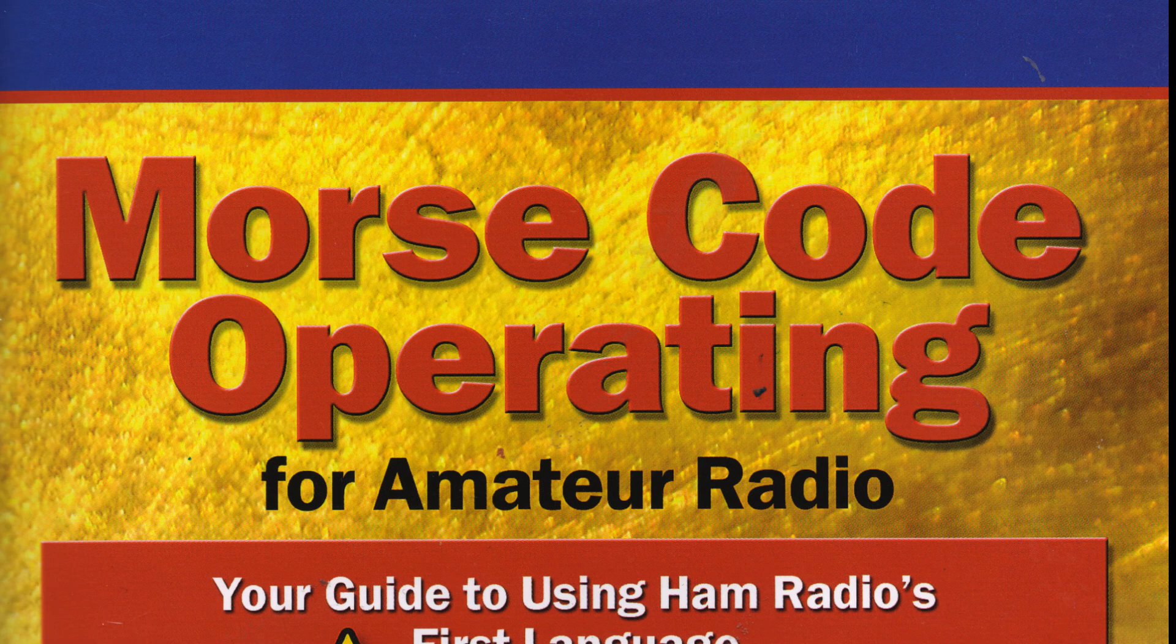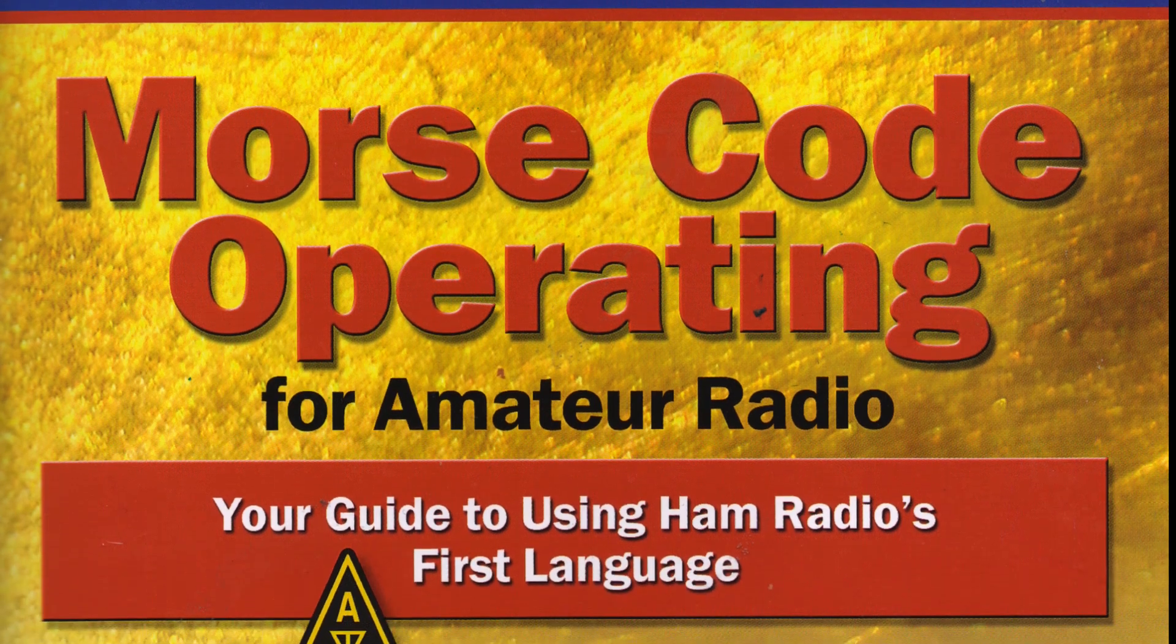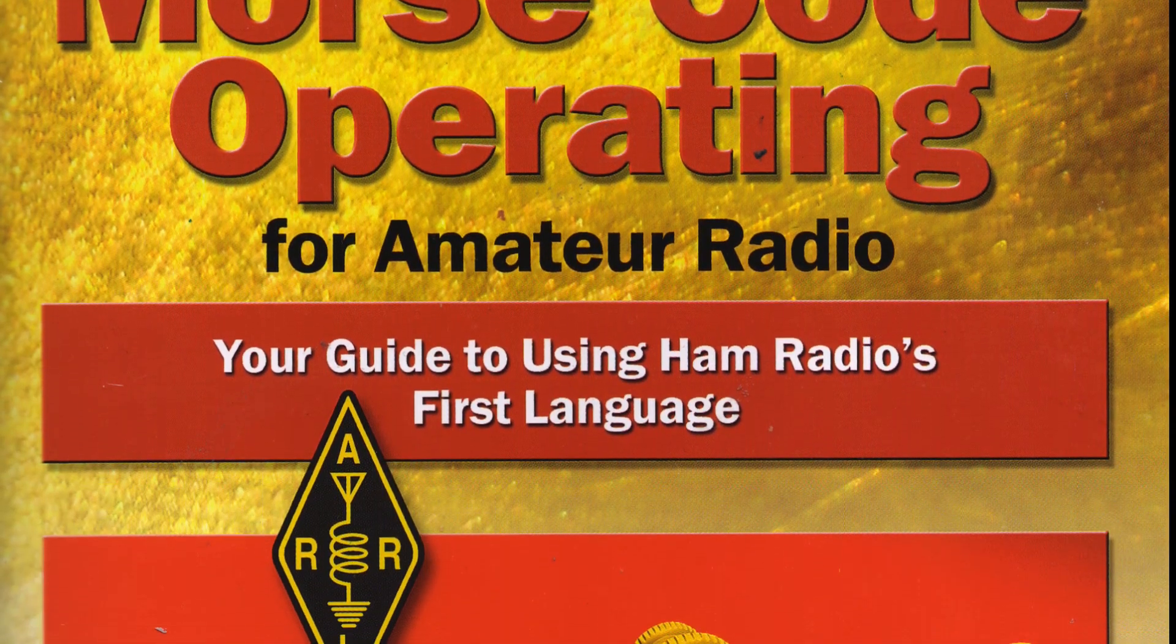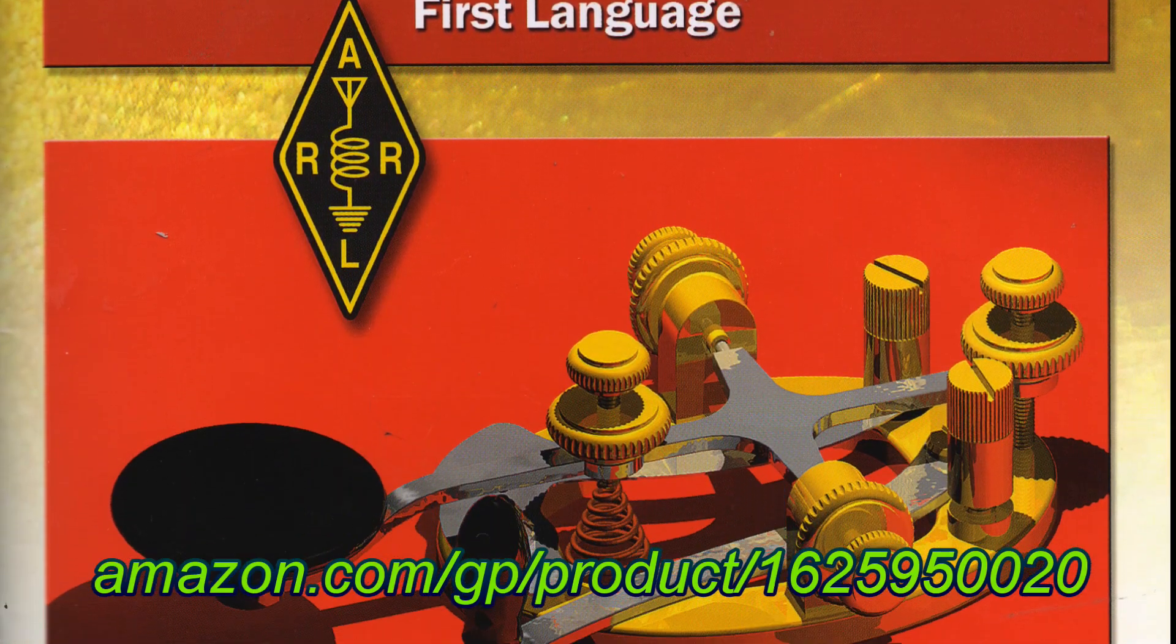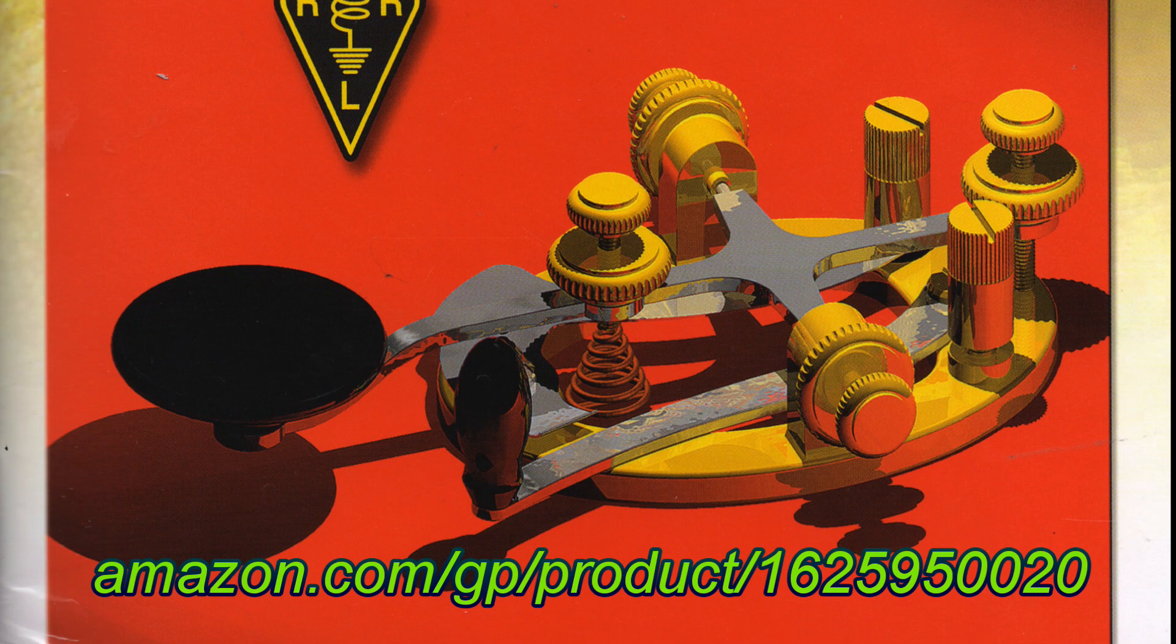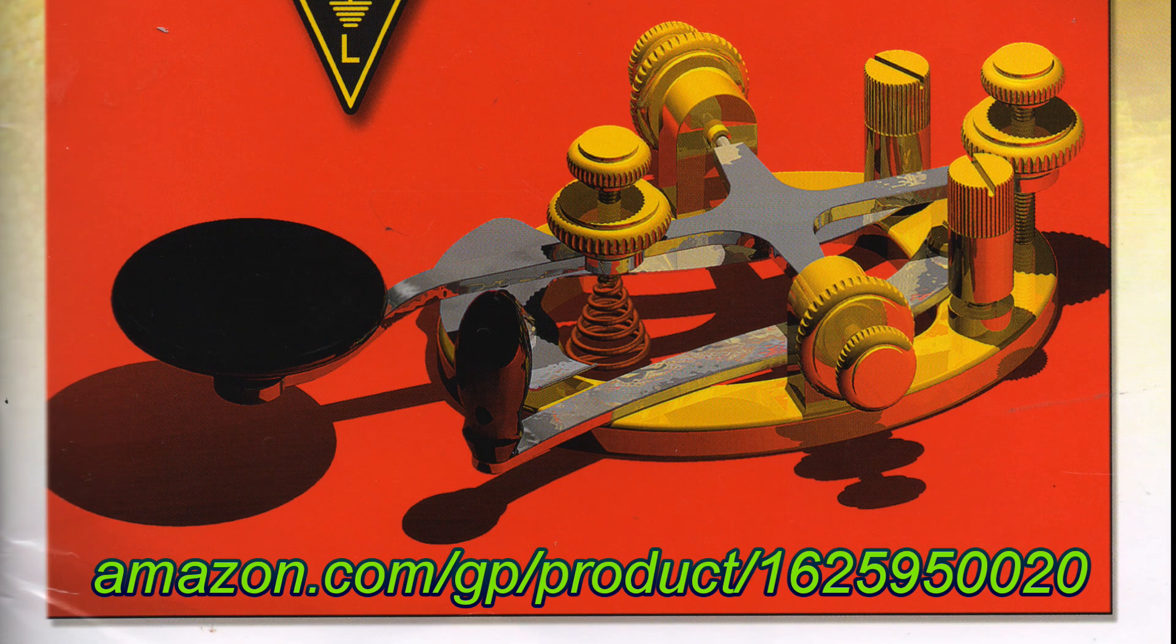The ARRL publishes a small but worthwhile book called Morse Code Operating for Amateur Radio. It's available from the ARRL or for a couple bucks less on Amazon. Plus, Amazon's shipping is less expensive. I'll put a link to the Amazon page on my website and in the YouTube description.